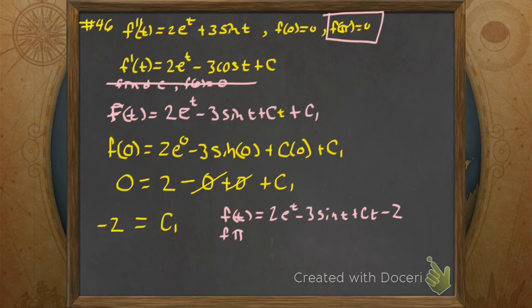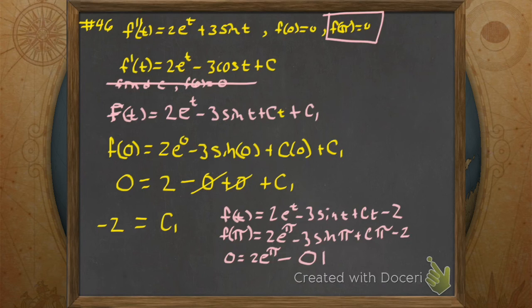So, f of π. That's 2e^π minus 3sin(π) plus C times π minus 2. But f of π was 0. So f of π is 0. That's equal to 2e^π minus... What's the sine of π? Zero. Let's just call that zero. Plus Cπ minus 2. And then we're solving for... That's a 2. So, we're solving for C. C turns out to be 2 minus 2e^π divided by π.